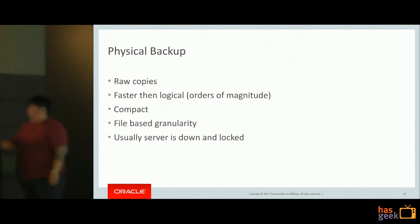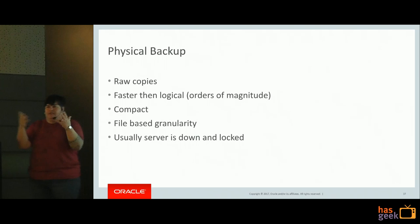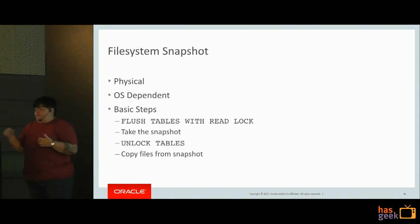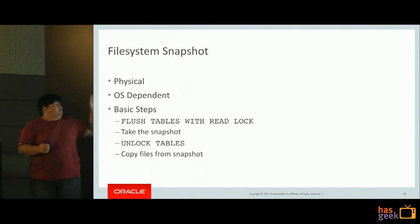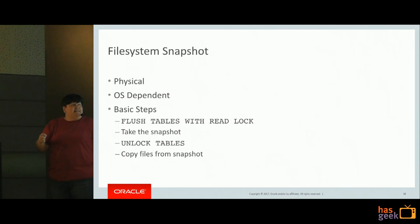Physical backups are raw copies of the actual files on the server - much faster than logical backups, and can be extremely compact. The big thing to remember is that it's file-based granularity, which may not be the level of granularity you need, and physical backups are usually taken while the server is down or locked. For a file system snapshot, you do a FLUSH TABLES WITH READ LOCK to lock your tables in one consistent state, take your snapshot, then unlock your tables. The biggest drawback is if the actual files themselves are corrupted, you have a corrupted backup.